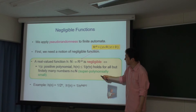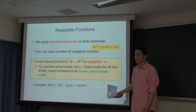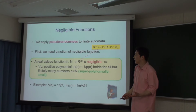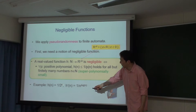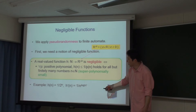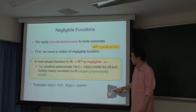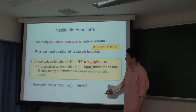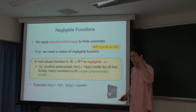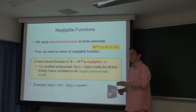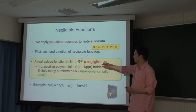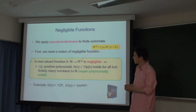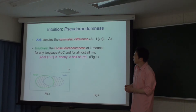今度は数度ランダムという概念をオートマトンに応用したものを考えます。まずnegligibleという関数を定義します。どんな多項式P(N)に対しても1/P(N)より小さい関数のことをnegligibleと呼びます。例えば2^{-N}やN^{-log N}のような関数がnegligibleです。つまり非常に速く0に近づく関数です。それを使って数度ランダムを定義します。